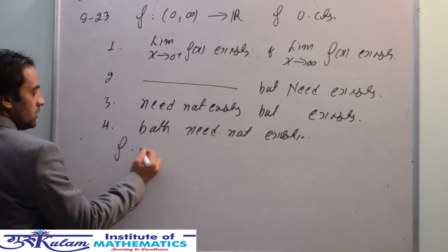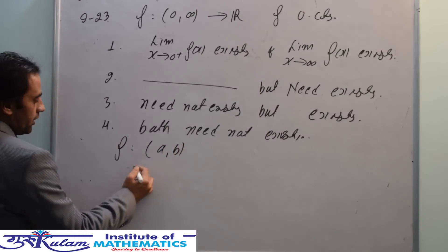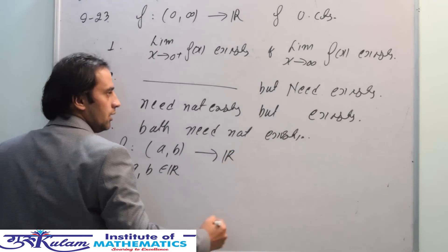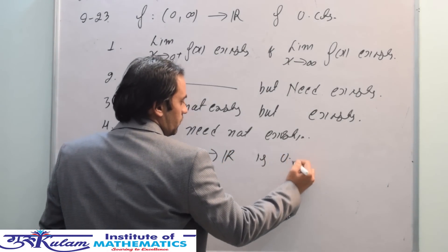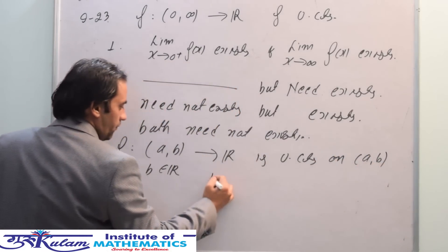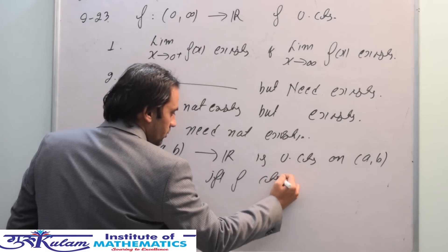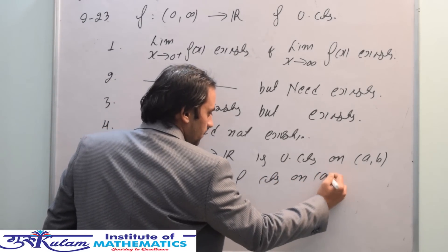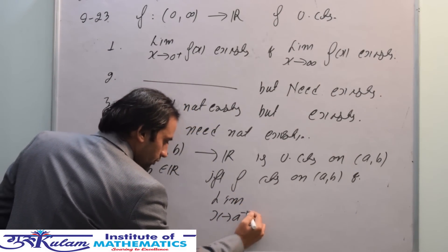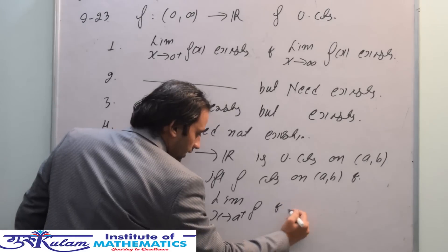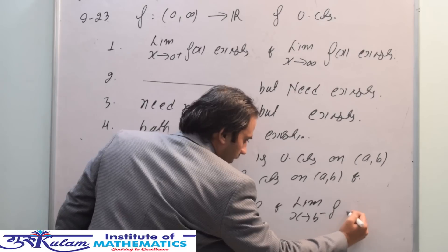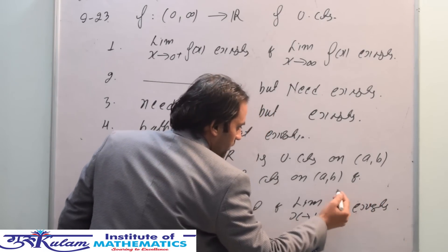If f is a function from (a, b) where a and b are fixed real numbers defined to R, then f is uniformly continuous on (a, b) if and only if f is continuous on (a, b) and limit x tends to a+ of f(x) exists and limit x tends to b- of f(x) exists. So this statement holds for open intervals of finite length.